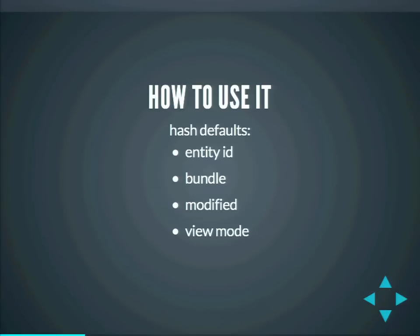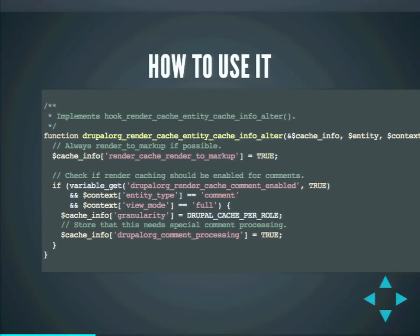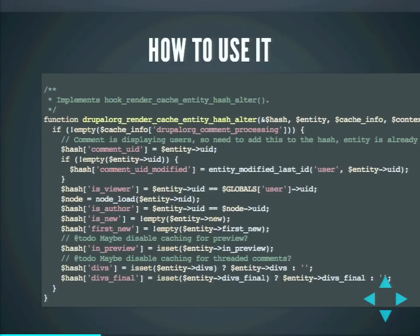There's also a hook for the cache IDs that you can alter. How to use it — this is how it was implemented on Drupal.org. The first hook essentially says do not use render cache; the second hook says okay, use it for comments. The interesting hook sets the hashes, particularly the comment UID modified hash. Since users are displayed in comments on Drupal.org, we had to make sure that whenever the user was updated, the comments were updated too. We used this hash to save the last time the user was modified.